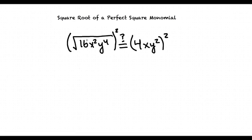Whenever we square a square root, the square root cancels out. So, for this part of the equation, we get 16x squared y to the 4th. And that's going to be equal to 4xy squared, all of that squared.